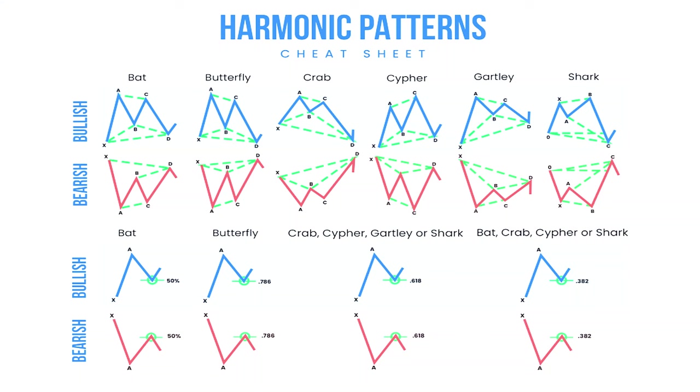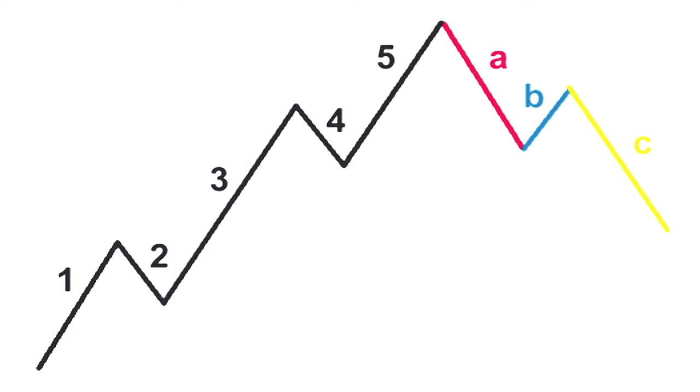Many traders like to combine chart patterns with other forms of technical analysis. For instance, harmonic chart patterns incorporate Fibonacci sequences to structure retracements and projections. Other traders may look for specific patterns over long periods, such as Elliott Waves, which predict future price targets based on previous wave lengths. Now let's get into some of the most popular chart patterns.